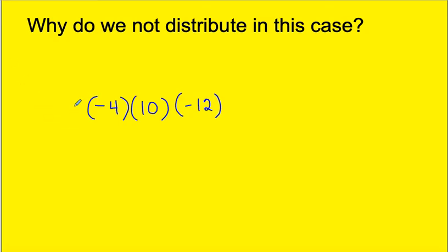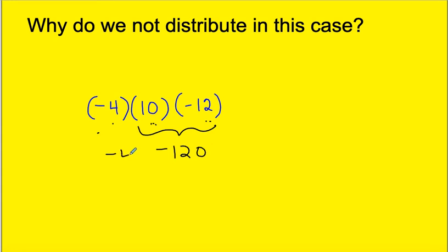So why do we not distribute in this case? Remember, the distributive property applies over addition and subtraction — this is not addition and subtraction, this is purely multiplication. So I could multiply 10 times negative 12 first, giving 120, and then multiply negative 4 times negative 120, which gives me positive 480. Make sure you don't think that negative 4 has to be multiplied to the 10 and to the 12 separately — the distributive property only works over addition and subtraction.